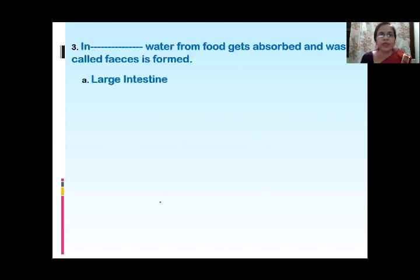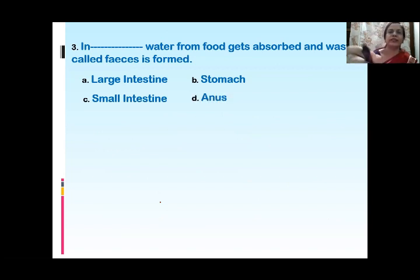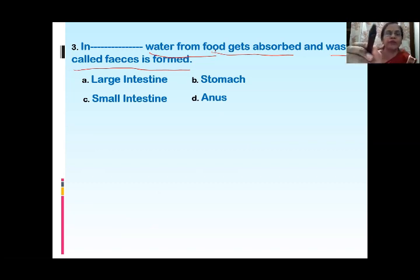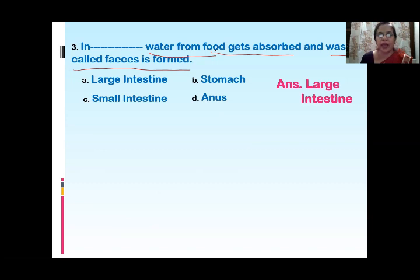The next question: In Dash, water from food gets absorbed and waste called feces is formed. Option one is large intestine, second is stomach, third is small intestine, and fourth is anus. It asks in which part of the digestive system feces is formed. The answer is large intestine.